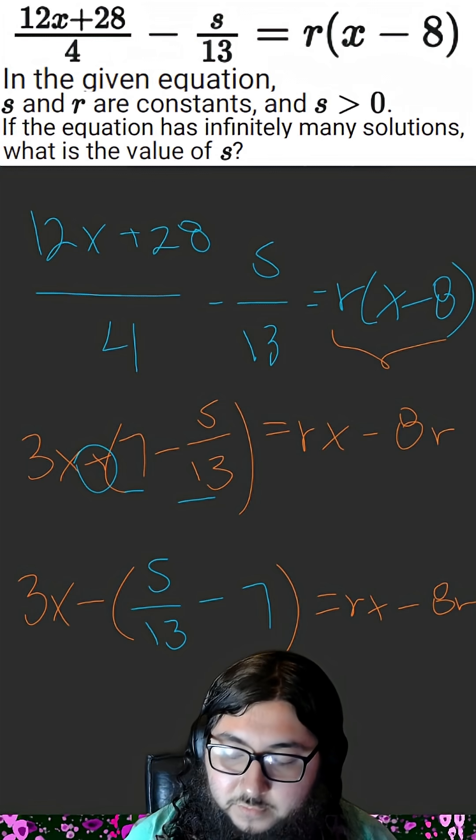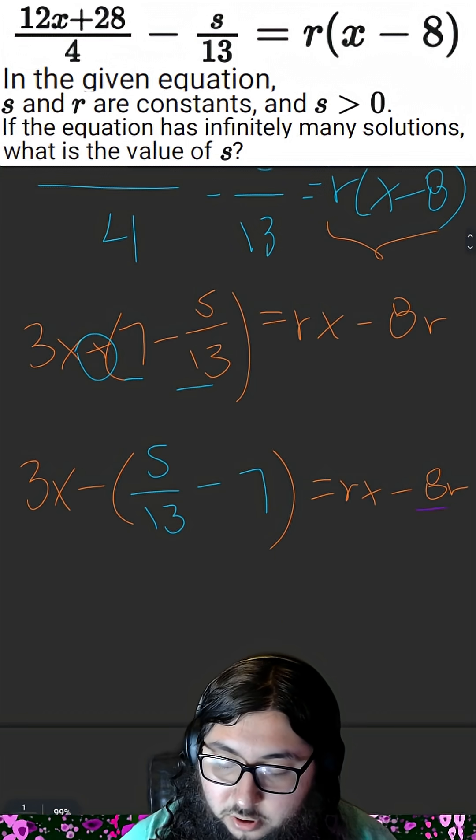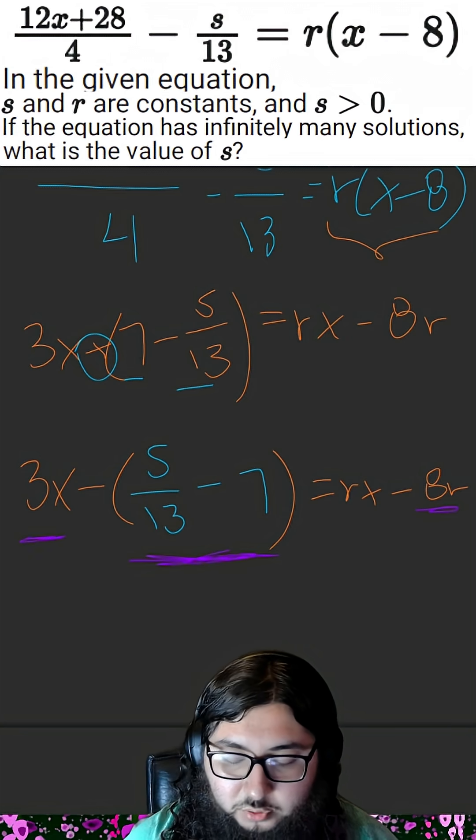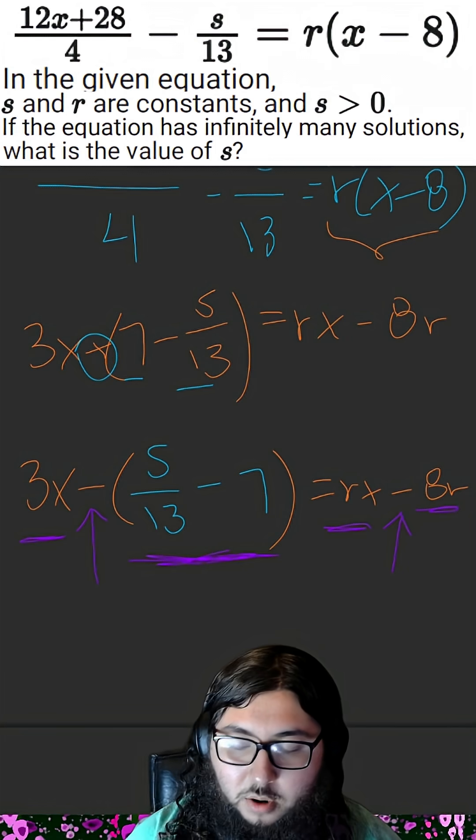Now we finally have something of the form rx minus 8r. It may not be obvious, but 8r is just some number, s over 13 minus 7 is just some number, and then we have 3x and rx with this minus sign in the middle. So they do parallel one another.